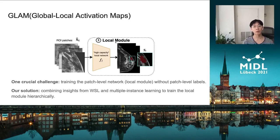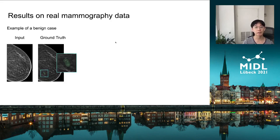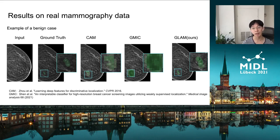One crucial challenge is that we need to train the patch-level saliency map network without patch-level labels. Our solution is to combine insights from weakly-supervised learning and multiple instance learning to train the local module hierarchically. As a result, our networks achieve much better performance than previous methods, as we can see in the images. Given input images, this is the ground truth, this is the previous method, and this is our method. We achieve much more fine-grained localization performance with more precise localizations.